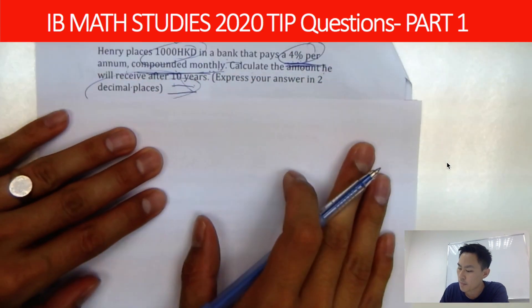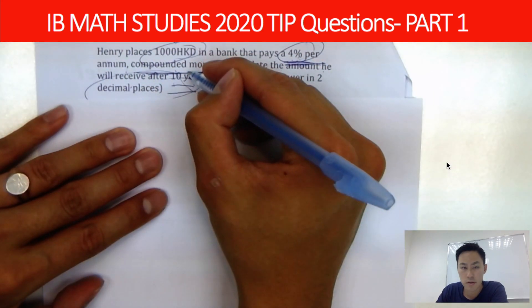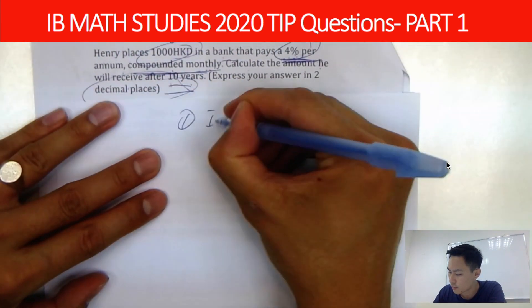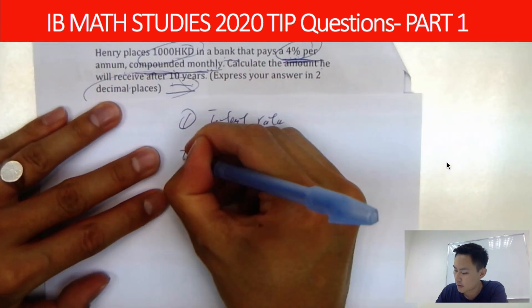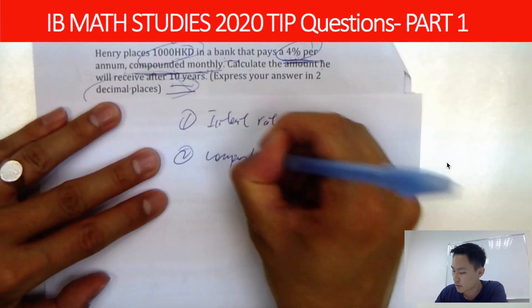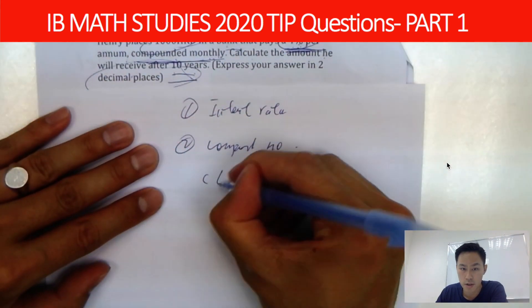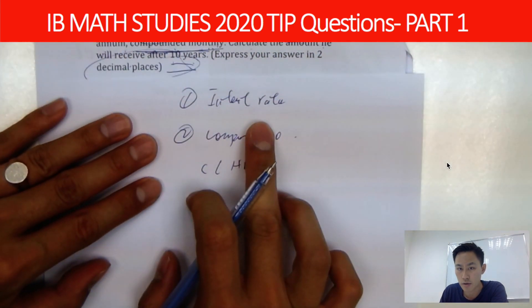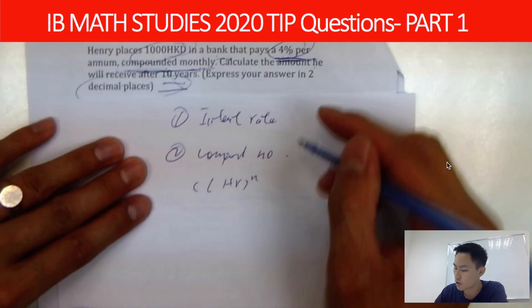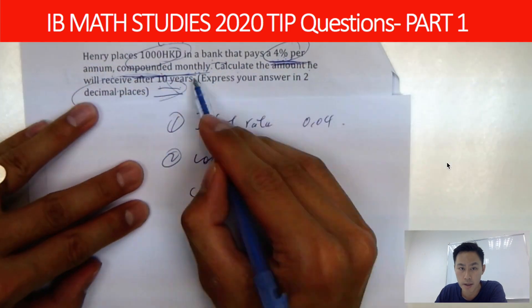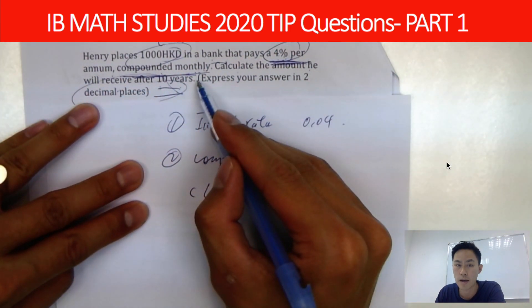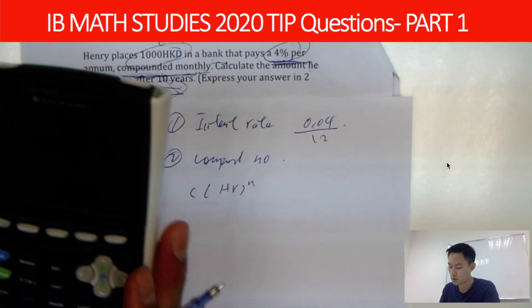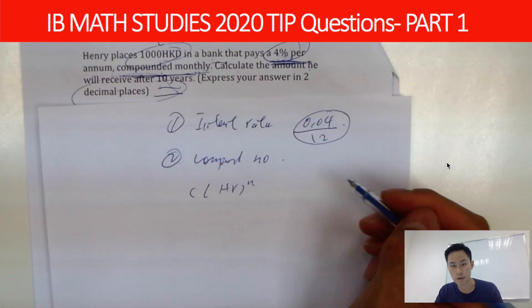Whenever you deal with compound interest, you have to determine two things: the interest rate and the compound number. The equation is C(1 + R)^n. For the interest rate, it's 0.04 per year, but compounded monthly — so you divide by 12 to get the monthly interest rate.